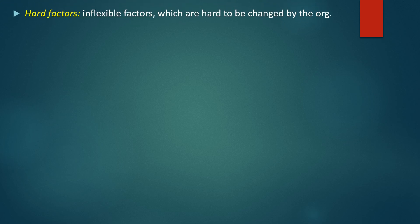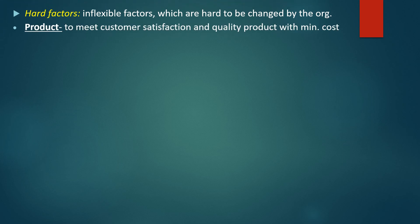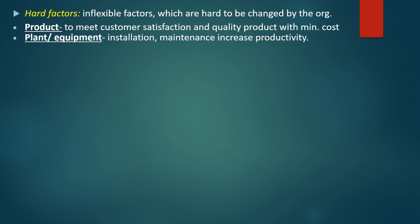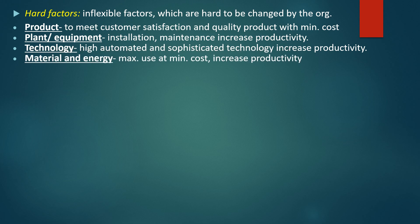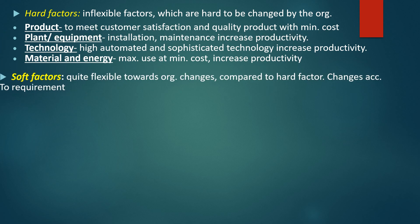Hard factors include inflexible factors which are hard to change by the organization. For example, the product must meet customer satisfaction with minimum cost. Plant and equipment includes installation and maintenance, which increases productivity. Technology refers to highly automated and sophisticated technology used to increase productivity. Material and energy must have maximum use at minimum cost in order to increase productivity.